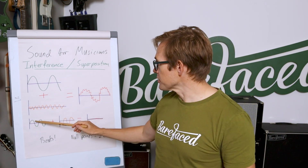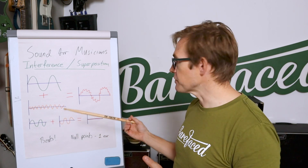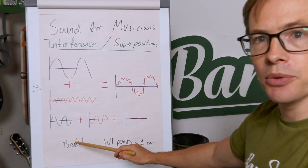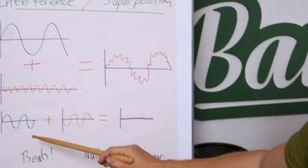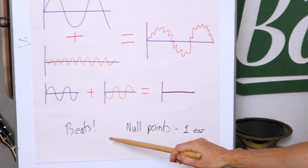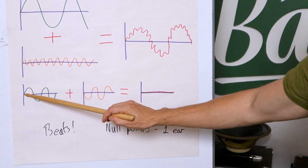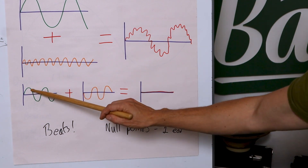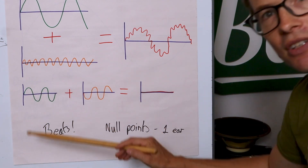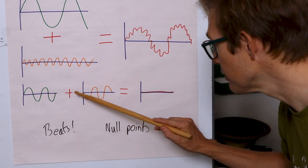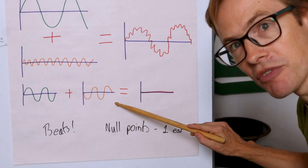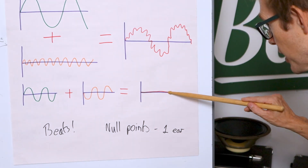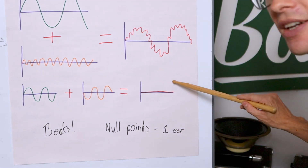Now the other example of this is kind of the reverse of it, and that's interference. That is where you have two waves of equal amplitude and equal frequency but they are 180 degrees out of phase — so this and this are reversed, in reverse directions. Add these two together and we get total cancellation. So that is interference.